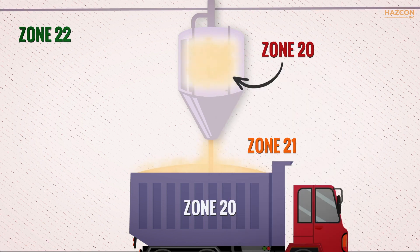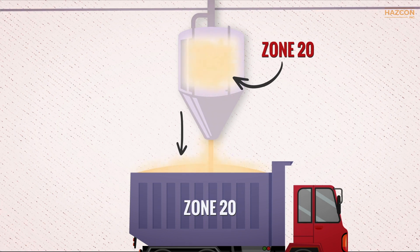Dusts are contained inside a dust handling container and are transferred to the truck tank. The area inside the container of dusts is defined as Zone 20 because explosive dusts are always present.